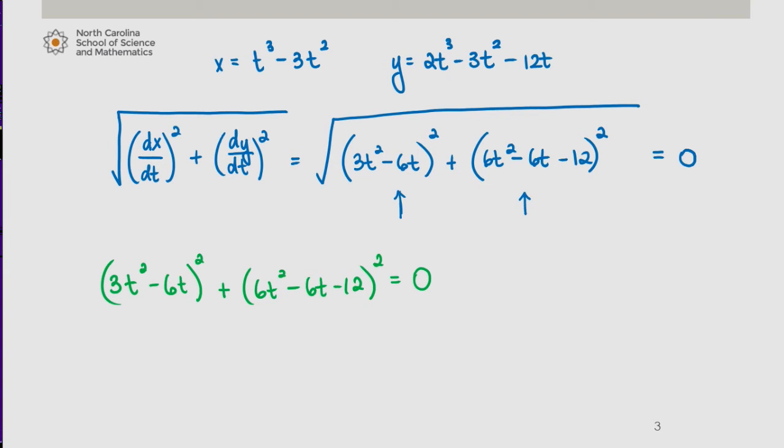And again, since this sum is zero and both terms are squared, neither one of these could be negative. The only way to get this sum to equal zero is if this expression equals zero and if this expression equals zero.